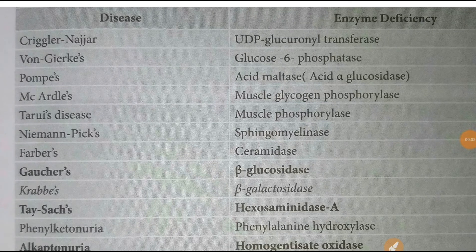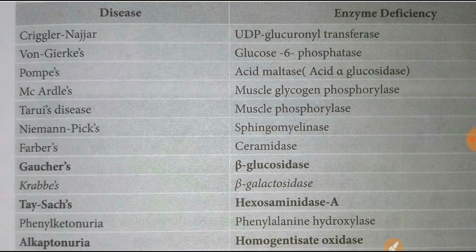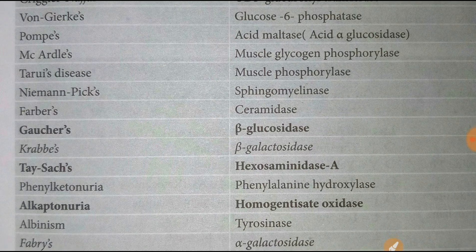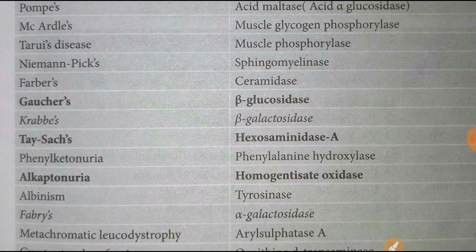This topic is: diseases and their enzyme deficiencies. First, Crigler-Najjar syndrome — UDP glucuronosyl transferase. Von Gierke's disease — glucose-6-phosphatase. Pompe's disease — acid maltase or acid alpha glucosidase. McArdle's disease — muscle glycogen phosphorylase. Tarui's disease — muscle phosphofructokinase. Niemann-Pick disease — sphingomyelinase. Farber's disease — ceramidase.